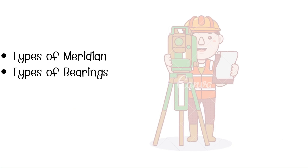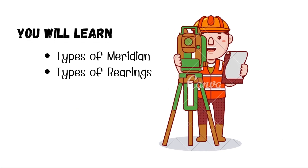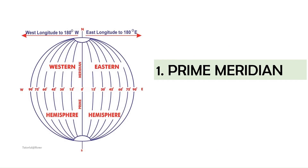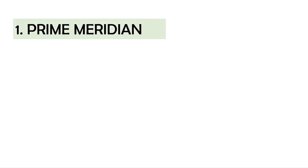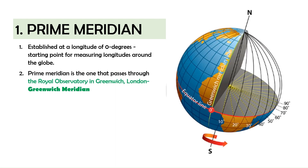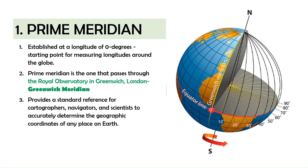Let's dive into the different types of meridians and how they are used for surveying. Number one is the prime meridian. The prime meridian is an imaginary line that runs from the north pole to the south pole, dividing the earth into the eastern hemisphere and the western hemisphere. It is established at a longitude of 0 degrees and acts as a starting point for measuring longitudes around the globe. There is only one prime meridian possible, and the most widely recognized is the one passing through the Royal Observatory in Greenwich, London, commonly referred to as the Greenwich Meridian, internationally adopted in 1884. The prime meridian provides a standard reference for cartographers, navigators, and scientists to accurately determine the geographic coordinates of any place on earth.